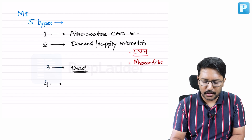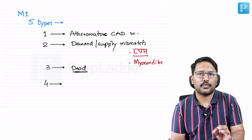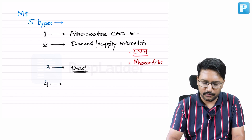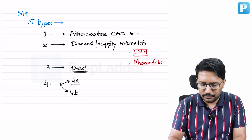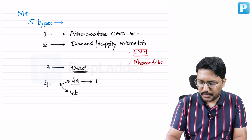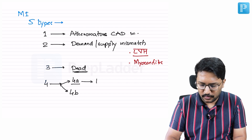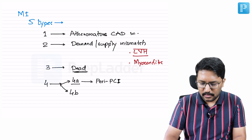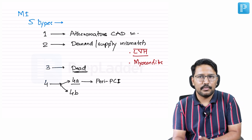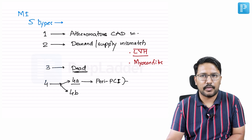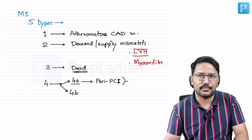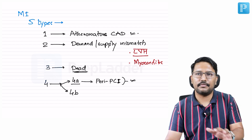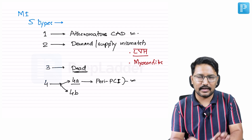Type 4 myocardial infarction is related to the procedure of PCI, and has two subtypes: Type 4A and Type 4B. Type 4A is where the patient develops MI as a consequence of PCI — either during or immediately post-PCI — as a complication, such as development or rupture of a coronary artery aneurysm. This is directly related to the procedure of primary percutaneous intervention or angioplasty.